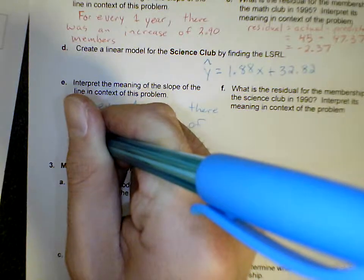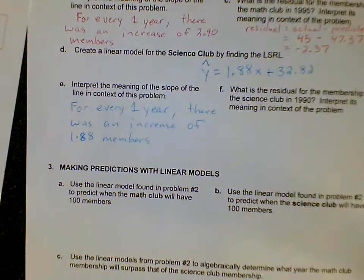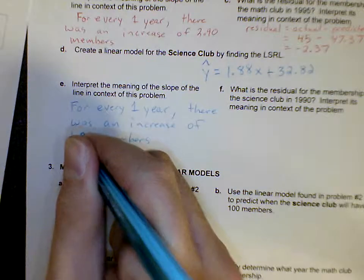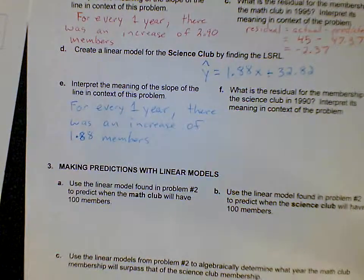And once again this is on average, okay, so obviously you can't increase by 1.88 members every single year. You can't have 0.88 people, so on average.